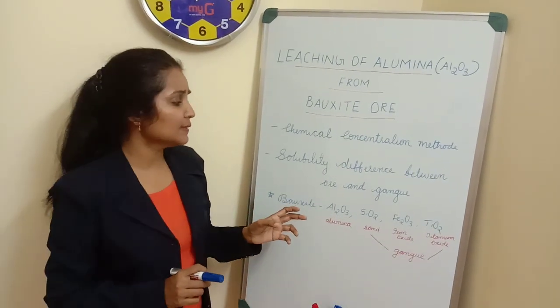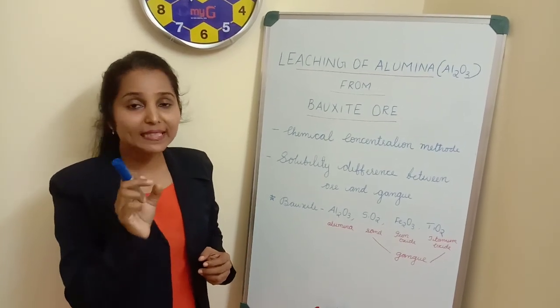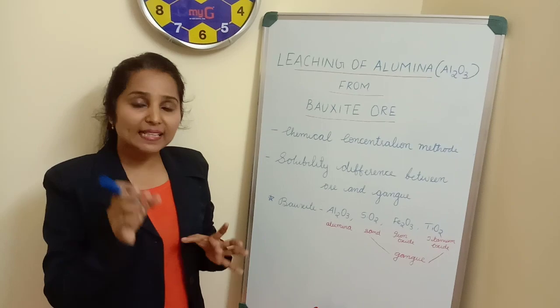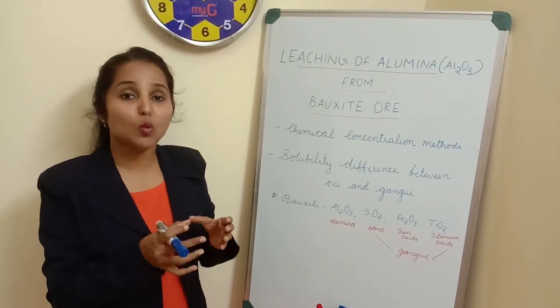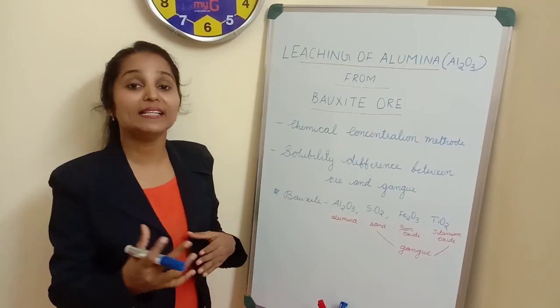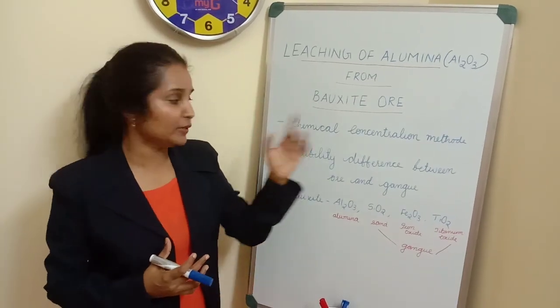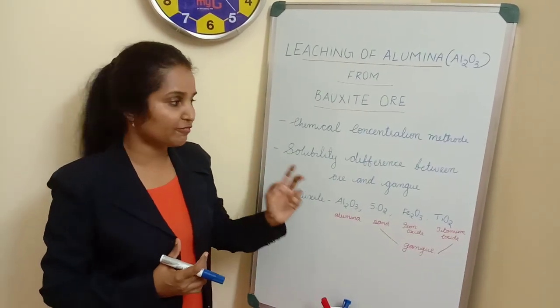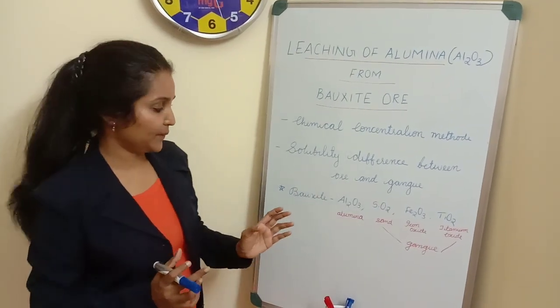This leaching of alumina is based on the principle of solubility difference between ore and gang particles. When the powdered ore is treated with a suitable chemical reagent, that chemical reagent specifically dissolves the powdered ore alone, but the impurities will remain insoluble. So the basic principle behind leaching of alumina is the solubility difference between the ore and the gang particles.